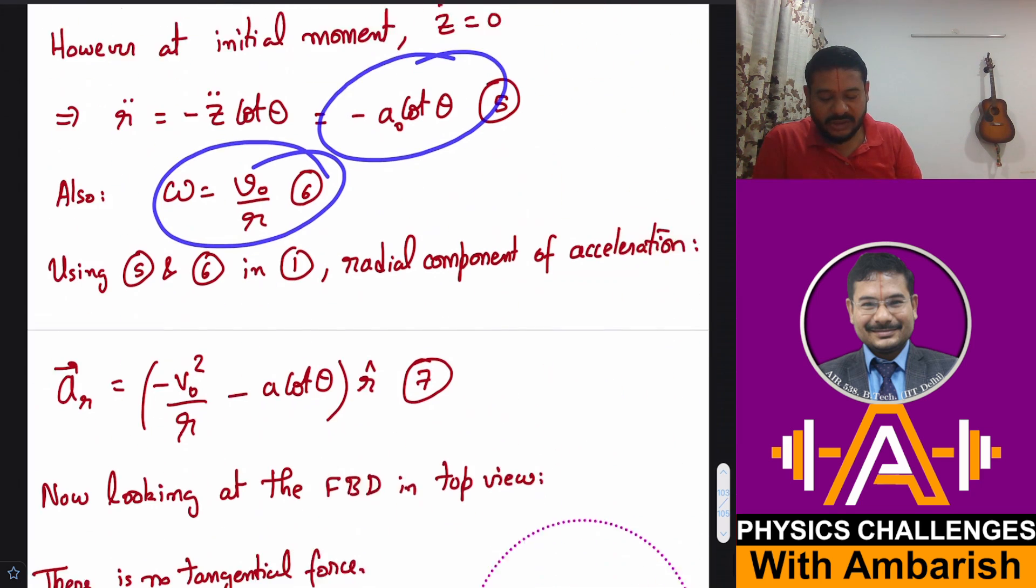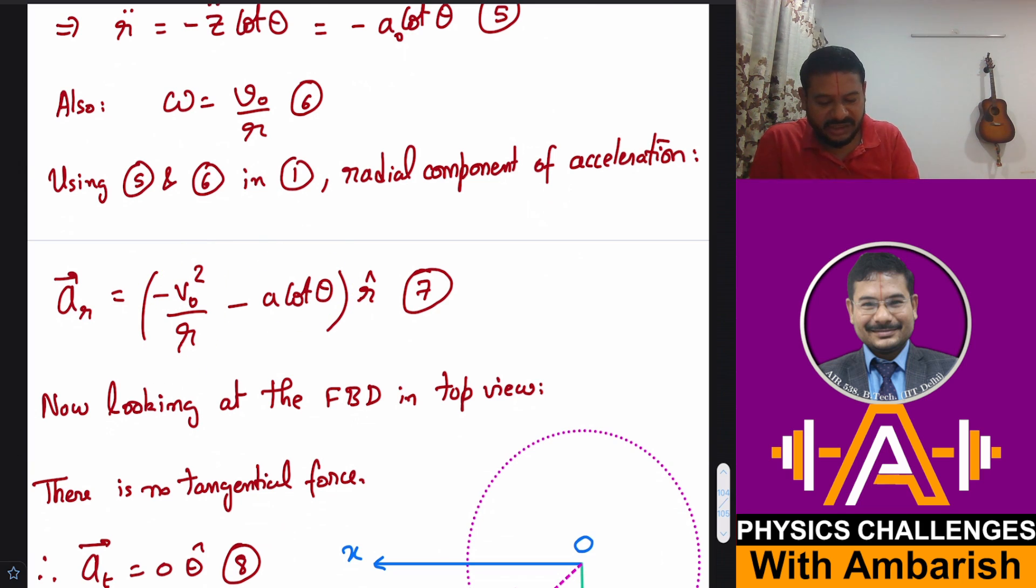So if you do that, you get radial acceleration as simply -V₀²/r - A₀ cot θ. Again this should be A₀ cot θ and, of course, r I can later on put as L sin θ.